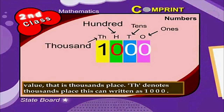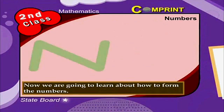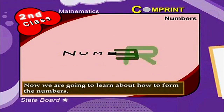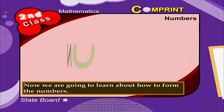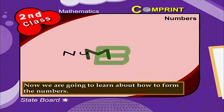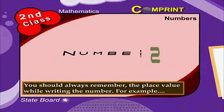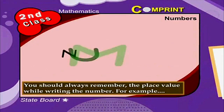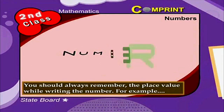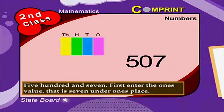One thousand can be written as one zero zero zero. Now we are going to learn about how to form numbers. You should always remember the place values while writing the numbers. For example, five hundred and seven.